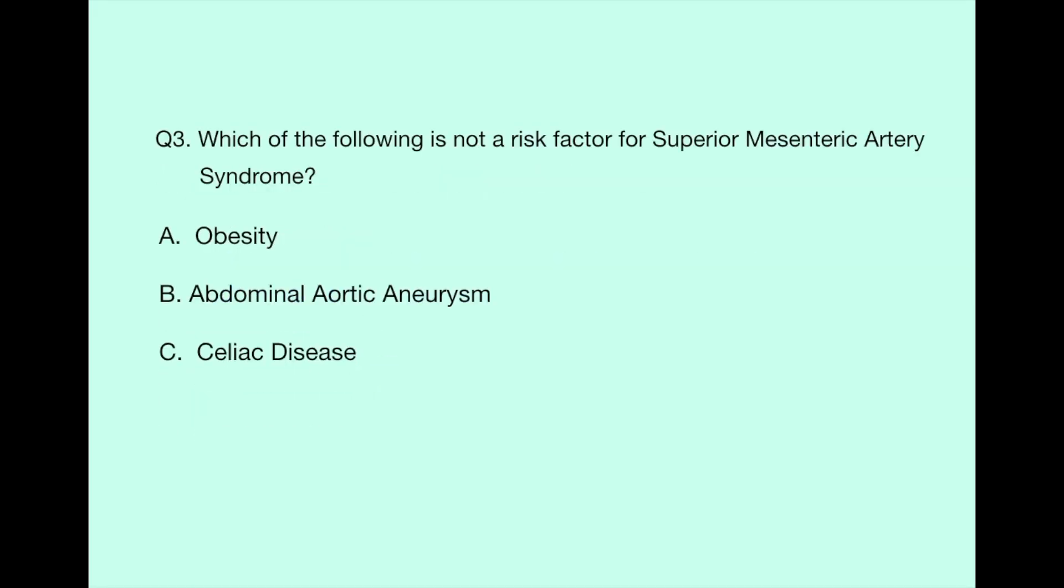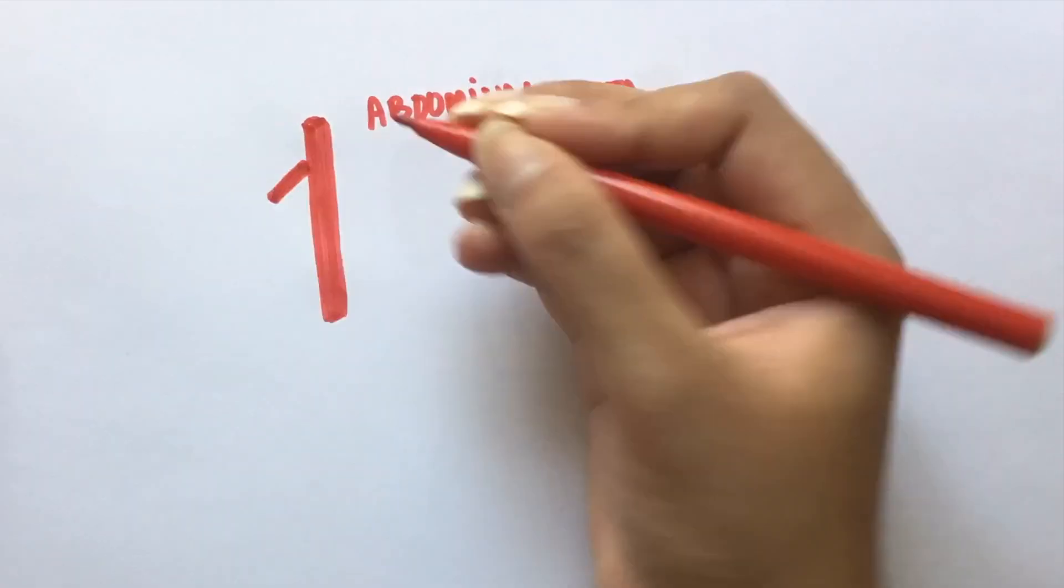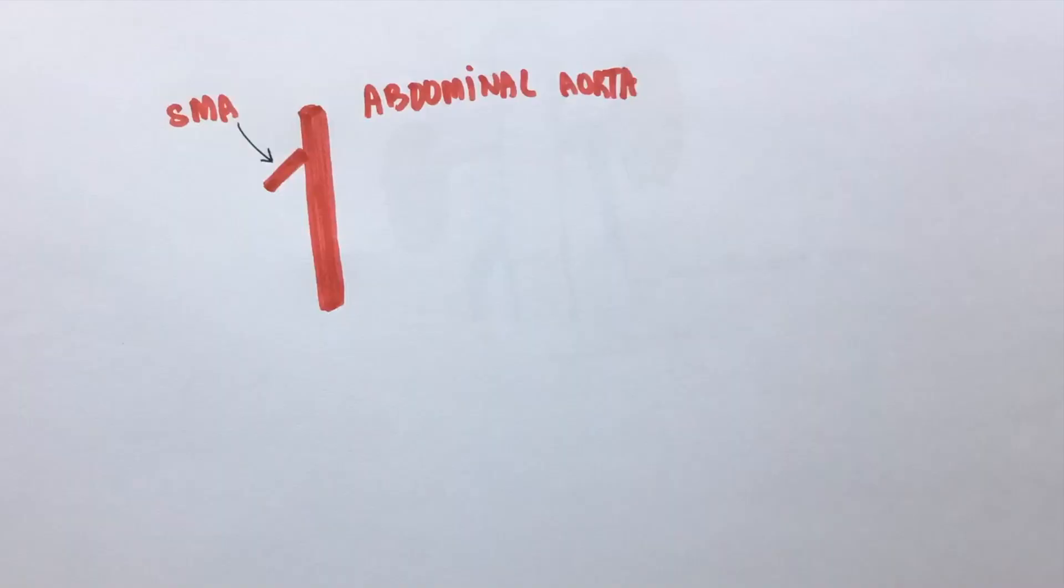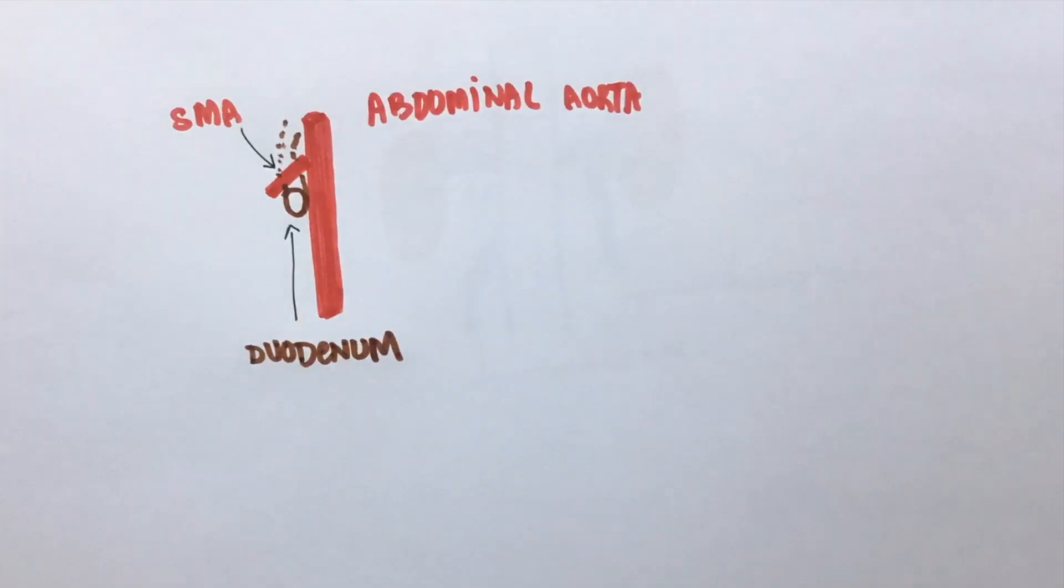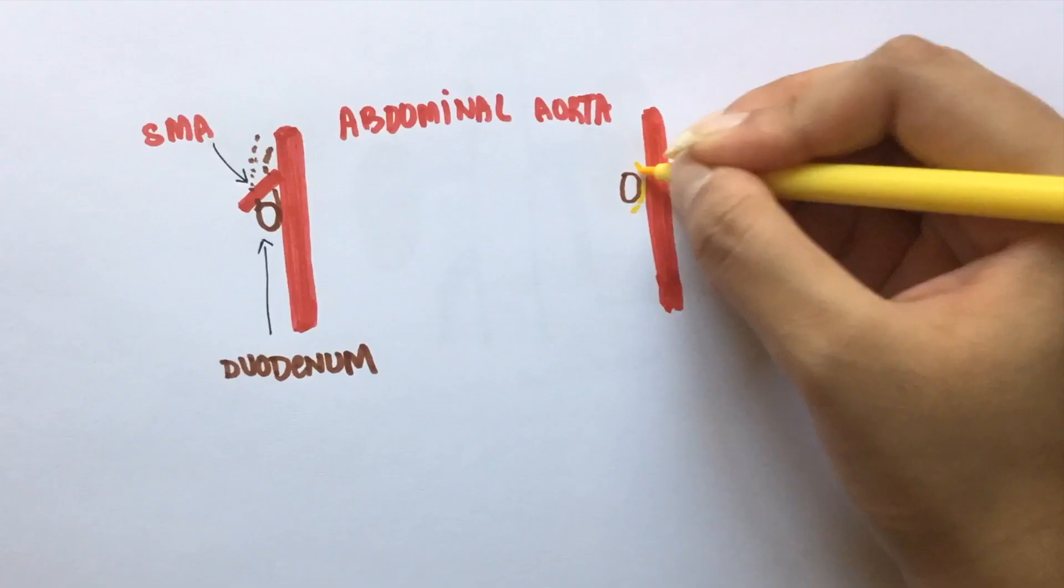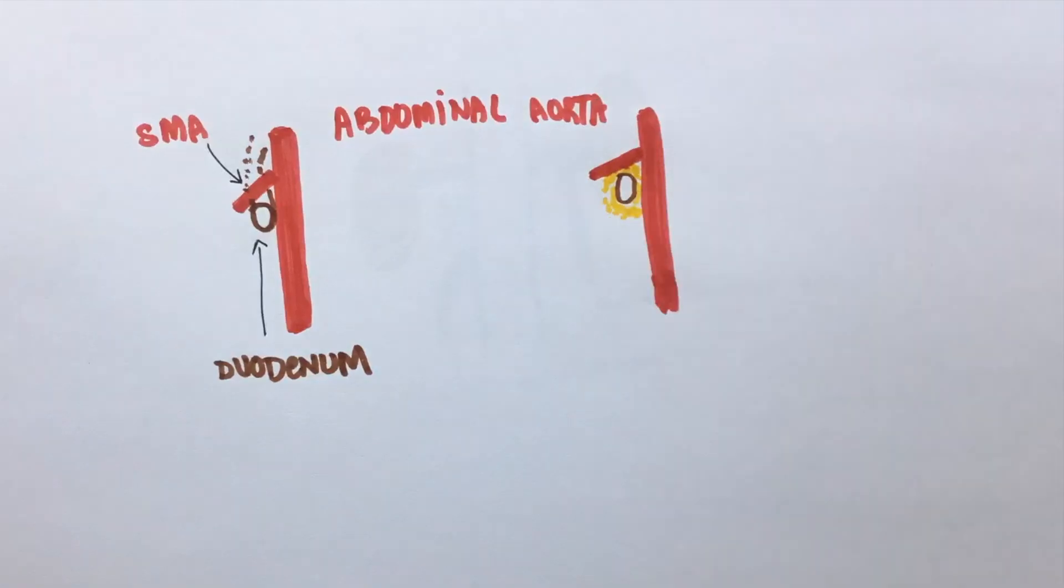Question number three: which of the following is not a risk factor for superior mesenteric artery syndrome? Option A: obesity, Option B: abdominal aortic aneurysm, Option C: celiac disease. We're looking at this picture from the patient's left side. This is the superior mesenteric artery, this is the abdominal aorta, and this is the third part of the duodenum, which is running in between these two structures. People who are obese have a lot of abdominal fat. This increases the angle between the superior mesenteric artery and the abdominal aorta, thereby reducing the risk of these two arteries compressing the duodenum.